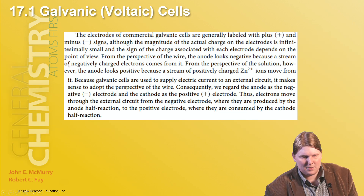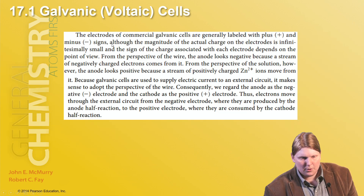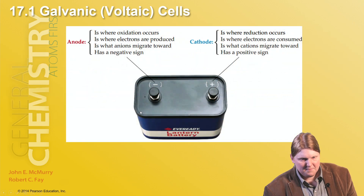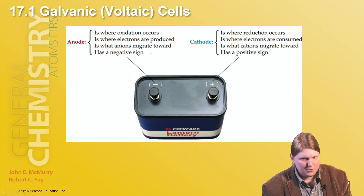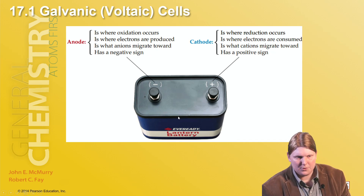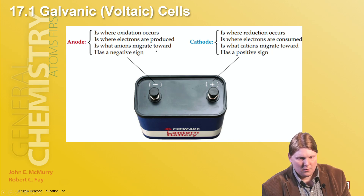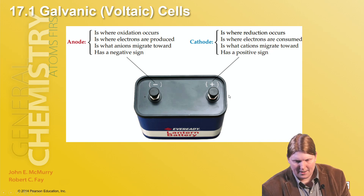From the perspective of the wire, the anode looks negative because the stream of negatively charged electrons comes from it. From the perspective of the solution, however, the anode looks positive because the stream of positively charged Zn²⁺ ions flows from it. Generally we call the anode negative and the cathode positive to keep with convention. The anode is where oxidation occurs, electrons are produced, and anions migrate to; the cathode is where reduction occurs, electrons are consumed, and cations migrate to.